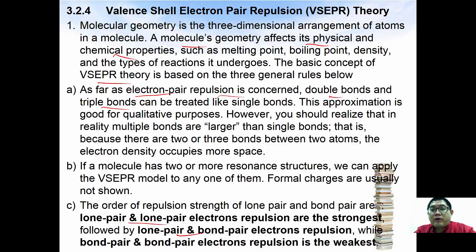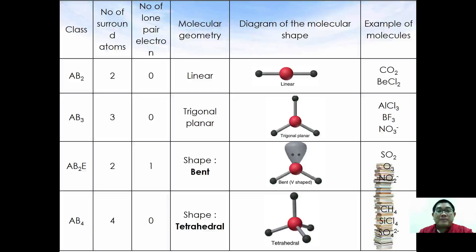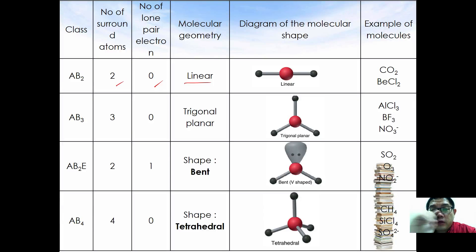We are going to go through the 13 basic shapes in VSEPR theory one by one. If you have two surrounding atoms and no lone pair electrons, the molecular geometry is a linear shape. Examples of molecules with linear shapes are carbon dioxide and barium chloride. This AB2 structure corresponds to sp hybridization.